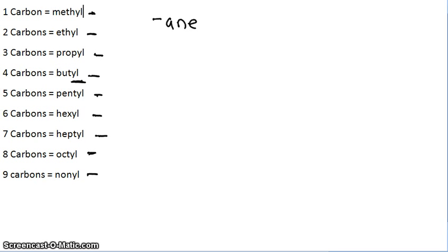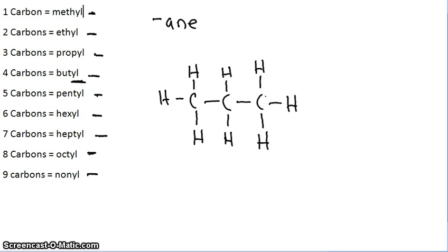Say we have a picture that looks like this. So the first thing you do is you count your number of carbons. And we have one, two, three carbons. We go back over here and we see that three carbons is propyl. And they're all single bonds between the carbons. So the name is going to end in ane. So you go prop, and then you take the YL off of propyl and replace it with ane. So you get propane.